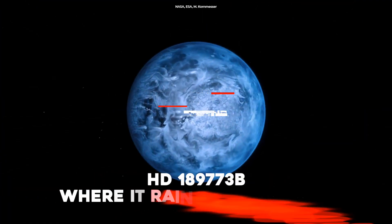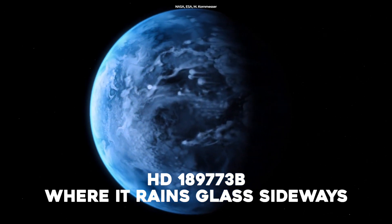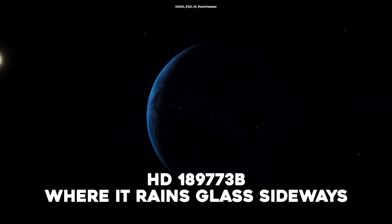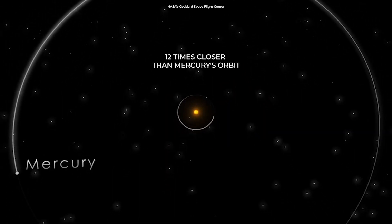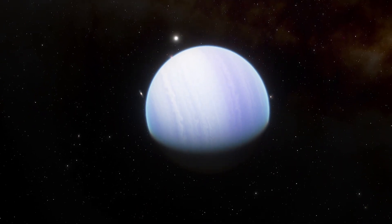HD 189773b – Where it rains glass sideways. This nightmare world is only 64 light-years away and is the closest hot Jupiter to Earth. It may look like a gorgeous deep blue marble floating serenely in space.